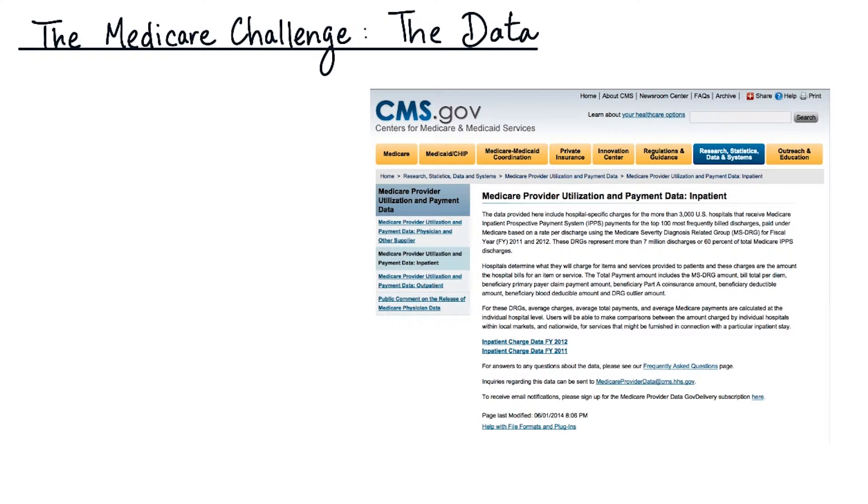We are going to start looking at the Medicare data from the Centers for Medicare and Medicaid Services website. The link is provided in the instructor's notes. If you click on the link, you will come to the page that looks like this. From the website, look for the link that says inpatient charges for fiscal year 2012. Clicking on that link will take you to the page where you can download the data.